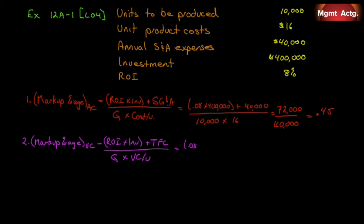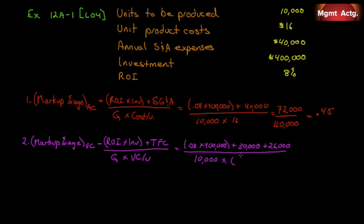On the top: 0.08 × $400,000, plus $3 of the $16 represents fixed costs for 10,000 units — that's $30,000 in fixed manufacturing costs — plus $26,000 in fixed SG&A. Divided by 10,000 units times the variable cost per unit: if $3 is fixed out of $16, then $13 is variable manufacturing cost, and $14,000 variable SG&A over 10,000 units is $1.40, giving $14.40 variable cost per unit. That gives us $88,000 over $144,000, which equals 0.6111, or approximately 61.1%.